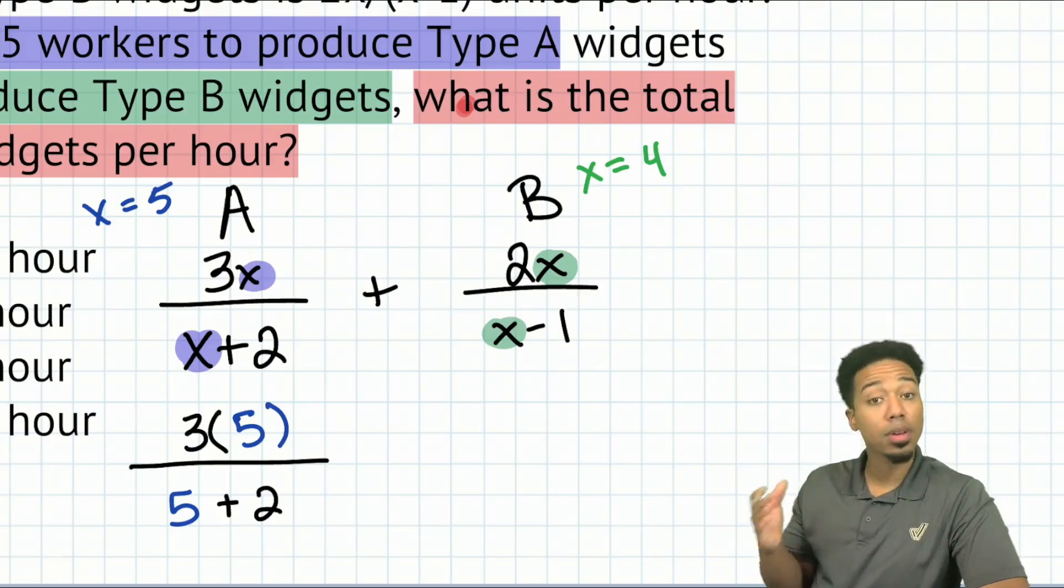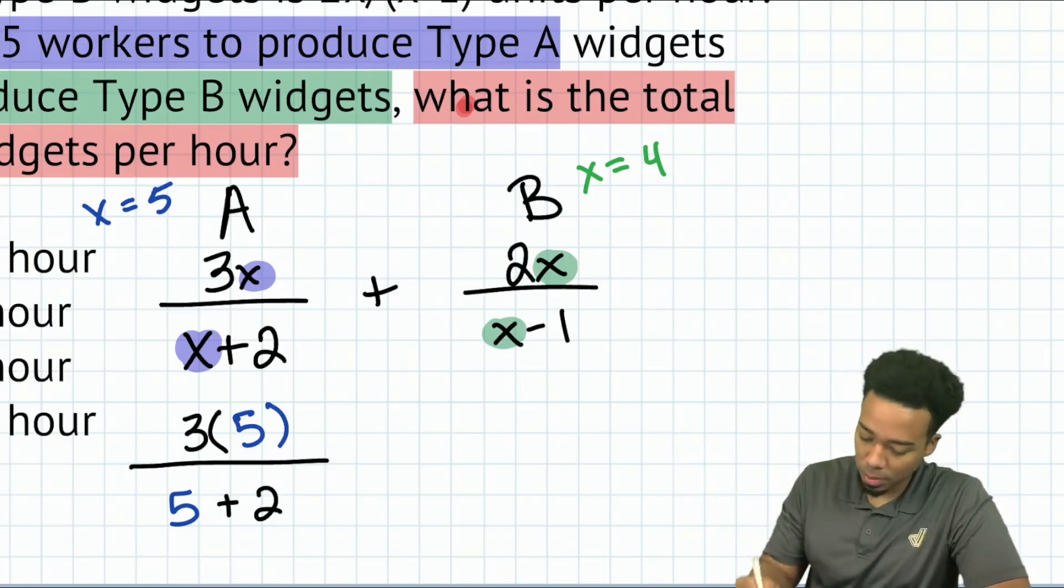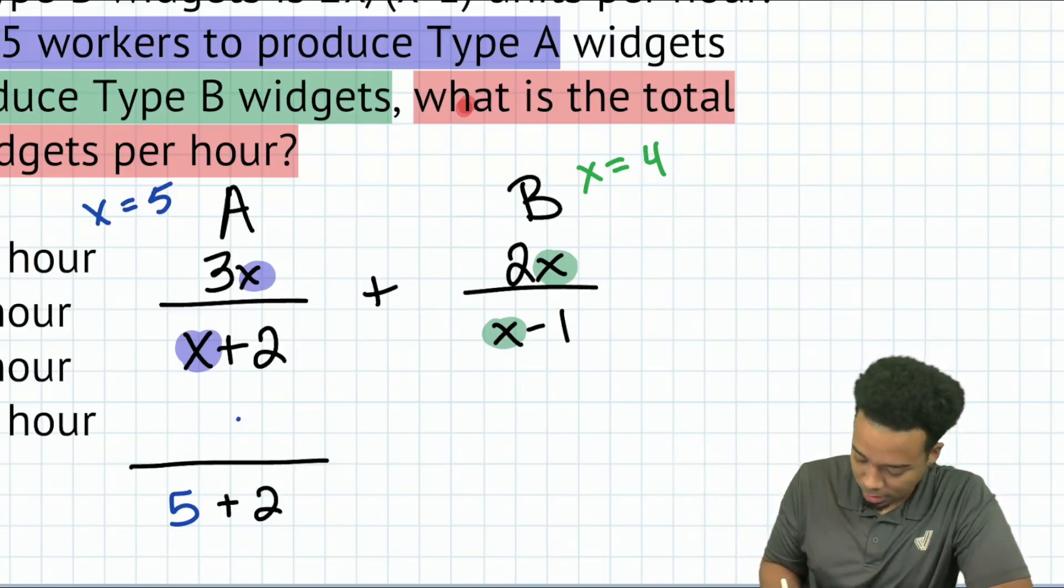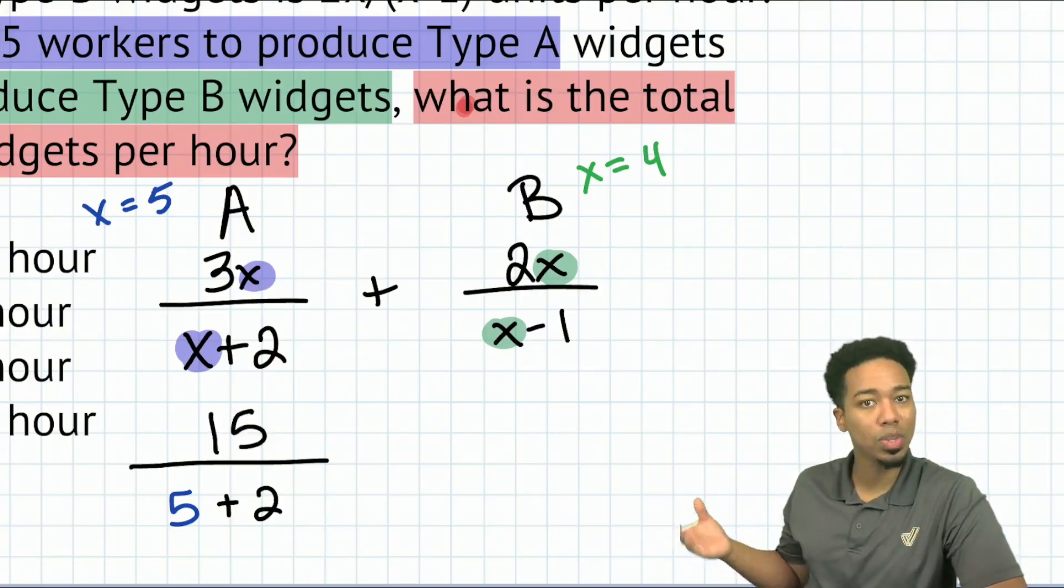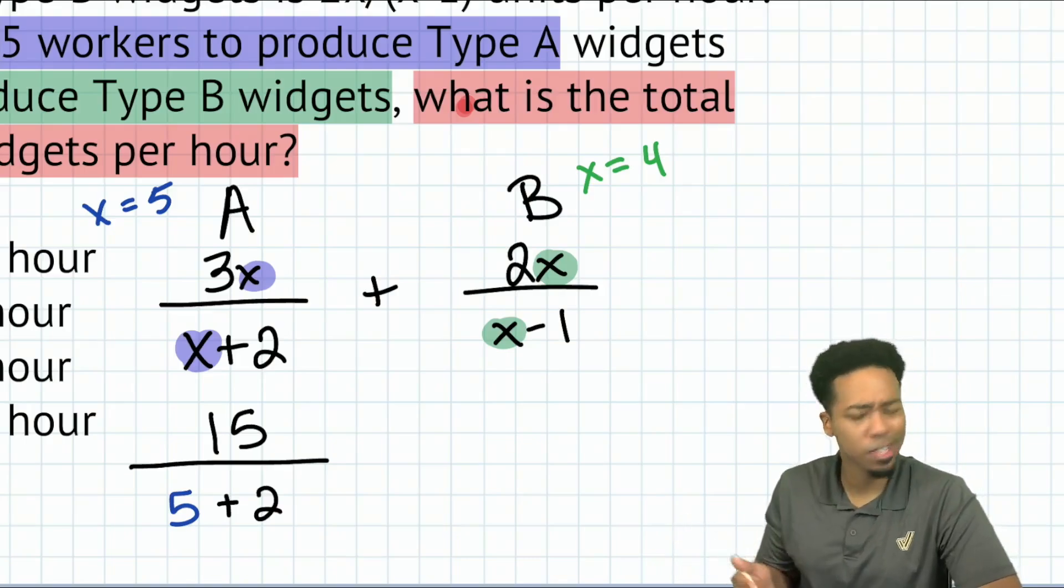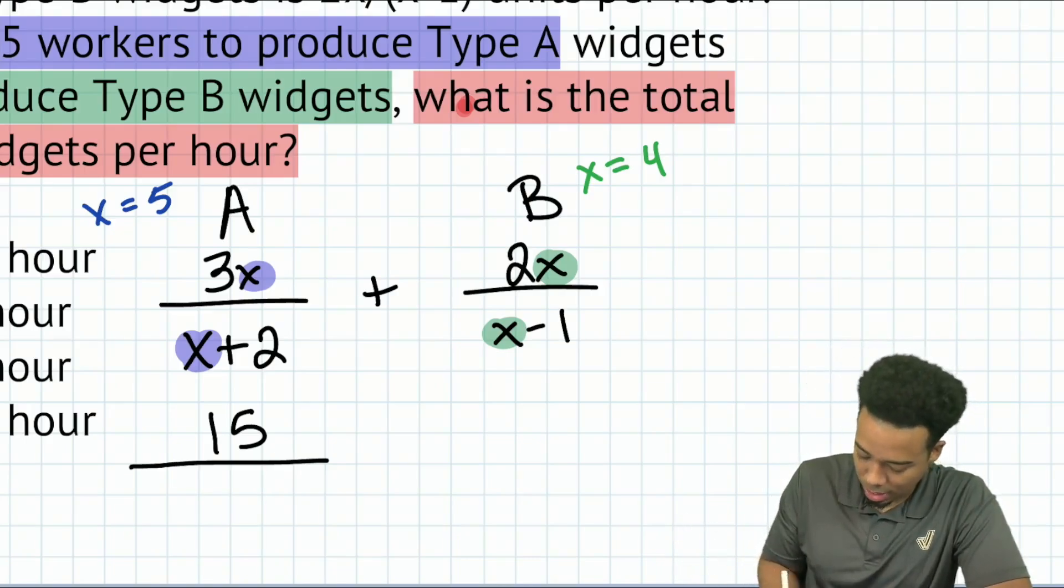So now that we're here, let's just go ahead and simplify this. On the top, we have three times five. So that is going to be 15. So I'll replace that with 15. And then we have five plus two in the denominator, five plus two, that's going to be seven. So let's replace that there.